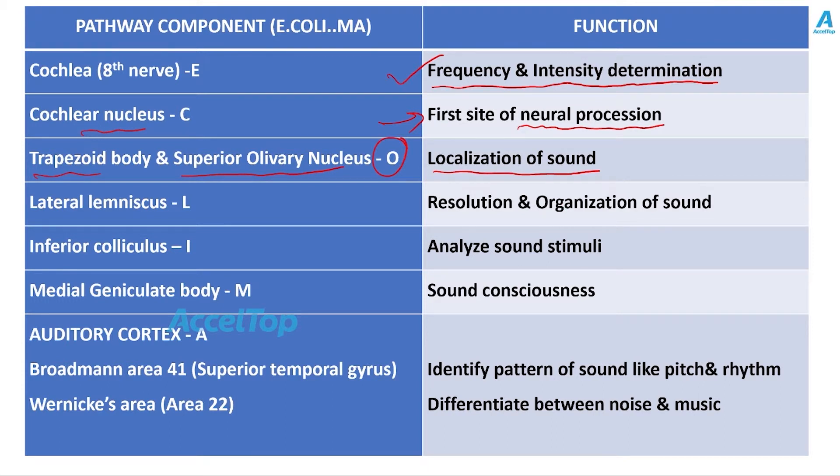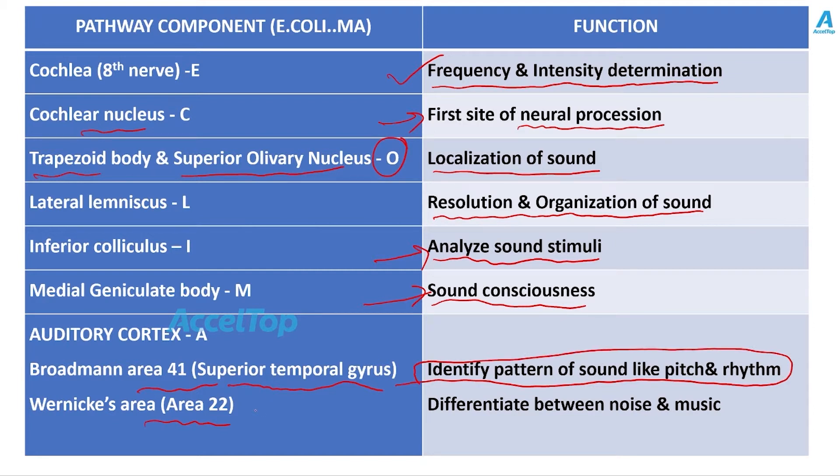What does lateral lemniscus do? It is concerned with resolution and organization of sound. What about inferior colliculus? It analyzes sound stimuli. Medial geniculate body takes care of sound consciousness. So the remaining left over option is auditory cortex, which we have divided into two, namely area 41 and area 22. Area 41 is Broadman area at the superior temporal gyrus which identifies the pattern of sound like pitch and rhythm. Whereas Wernicke area, area 22, deals with differentiation of noise, differentiation between the noise and music. What is noise and what is music? Pleasurable sound to the ears is music, whereas irritable sound is noise. So the differentiation is done by the Wernicke area, that is area 22 of the auditory cortex.